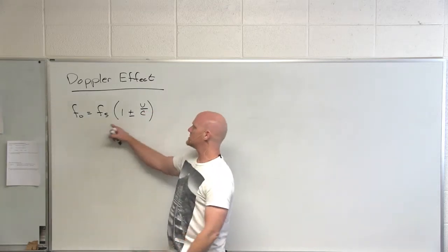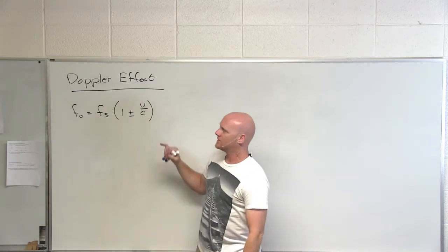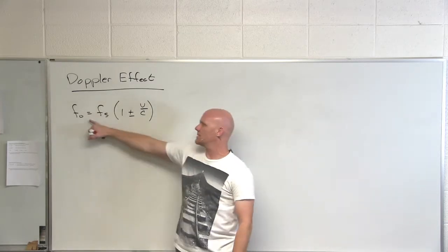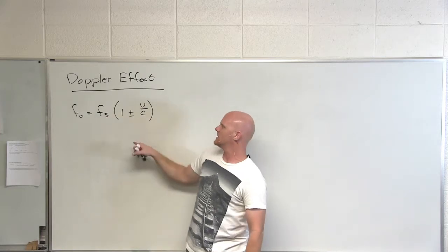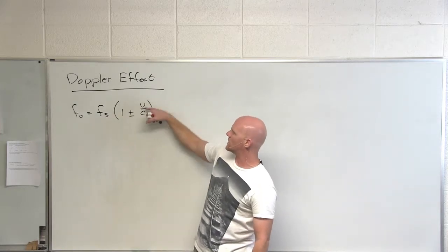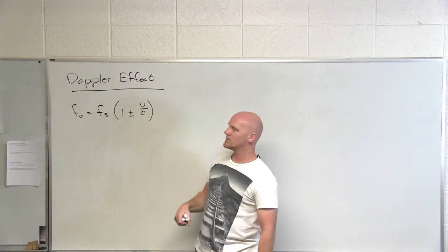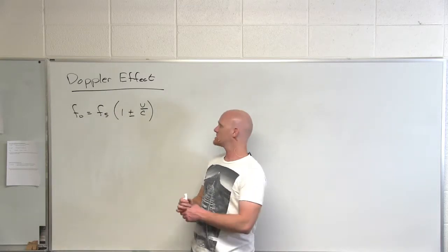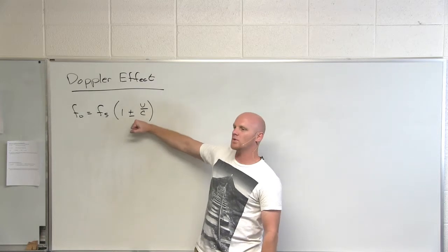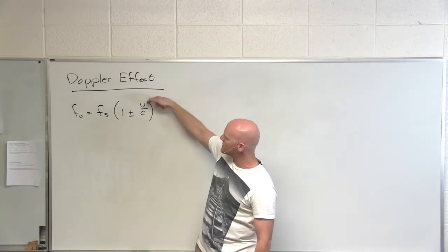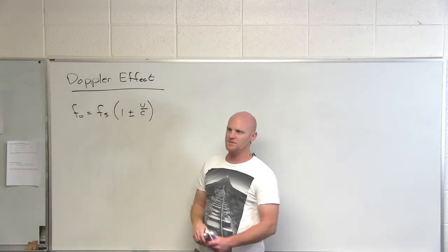And that's kind of what this equation here summarizes. The observed frequency is equal to the original emitted frequency from the source times one plus u over c, where u is the relative velocity between the observer and the source, and c is the speed of light. And this equation really only works if the speed traveled is a lot less than the speed of light.